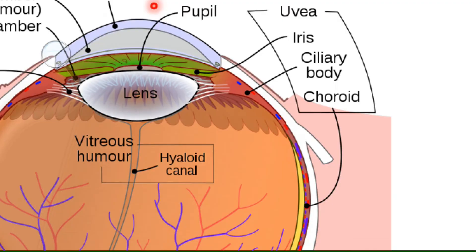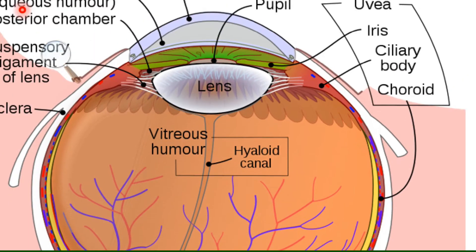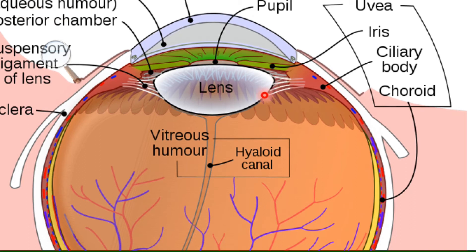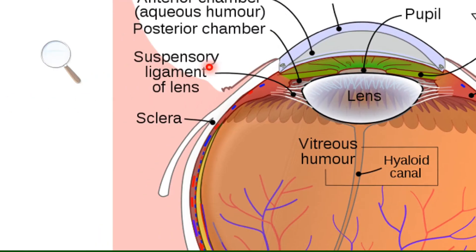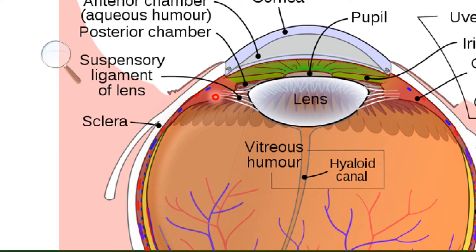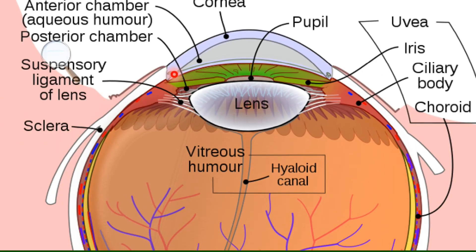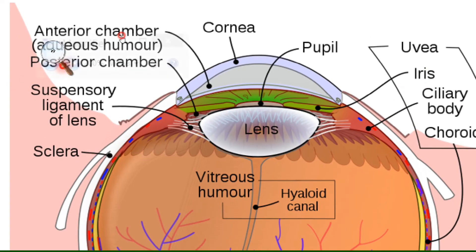You can see the lens right here, and there are white fibers holding the lens in place. These white fibers are attached to a muscle-like structure. These white fibers are actually called the suspensory ligaments of the lens — they suspend the lens and hold it in place. The structure to which they are attached is called the ciliary body.